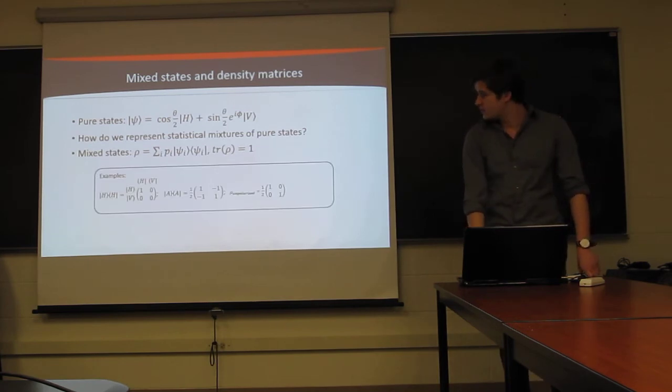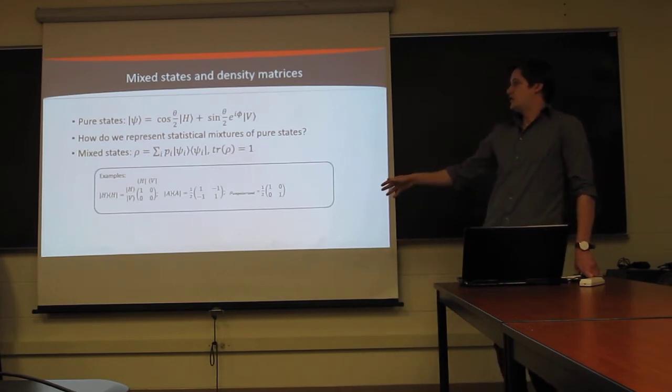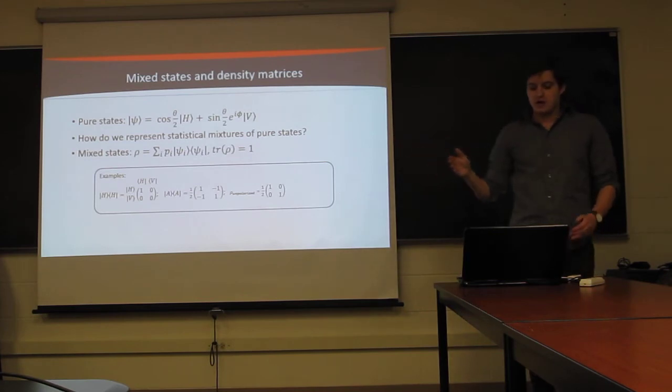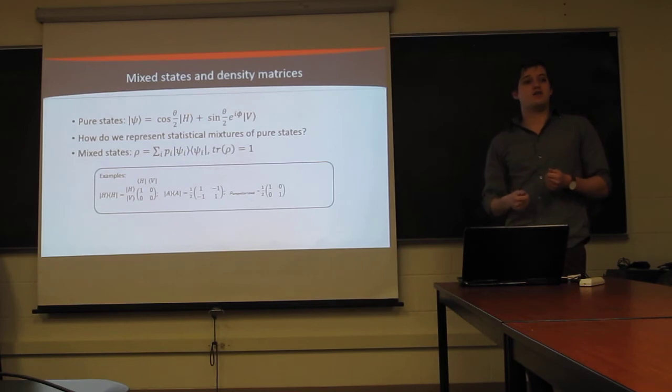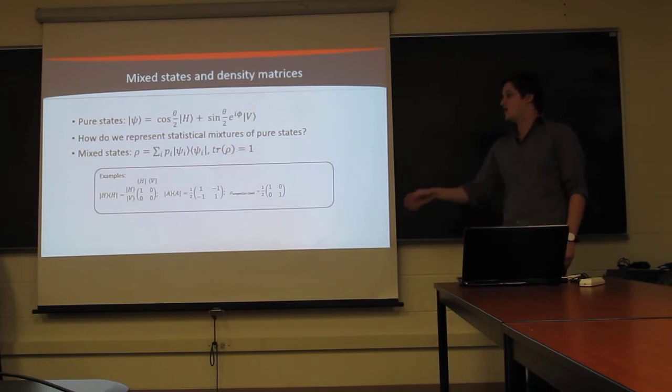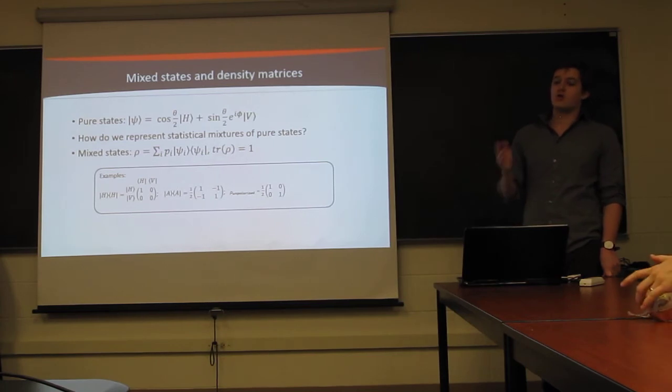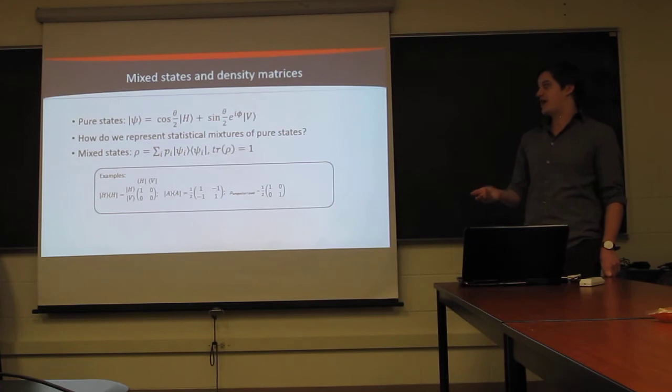So, some examples. Horizontally polarized light, relatively straightforward. It's just a 1 in the top left corner. We can move on to another pure state, anti-diagonal. Here, we have 1/2 in both portions of the diagonal, corresponding to the fact that we have equal weighting of horizontal and vertical in our state. And then, the minus 1/2s in each of the off-diagonal components correspond to the phase between horizontal and vertical. Anti-diagonal being H minus V, we have minus 1/2s in each of those.